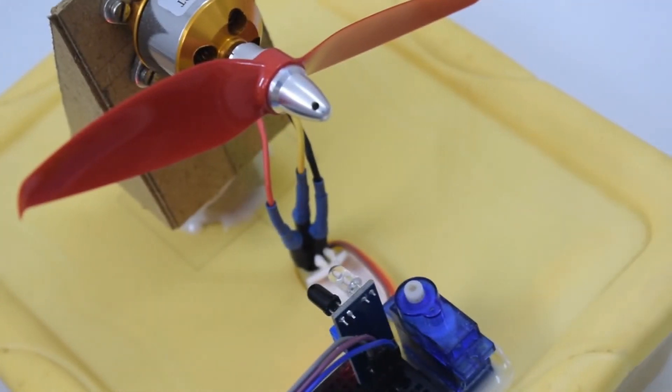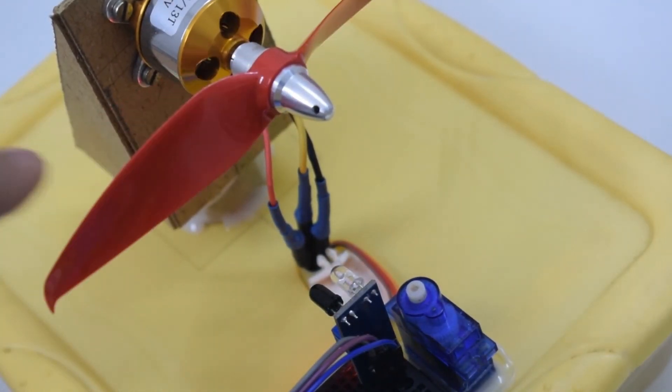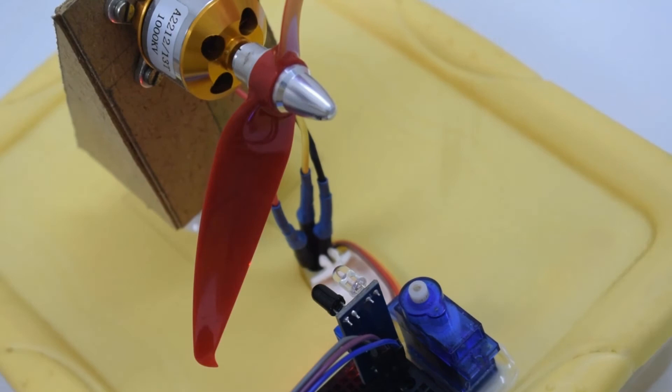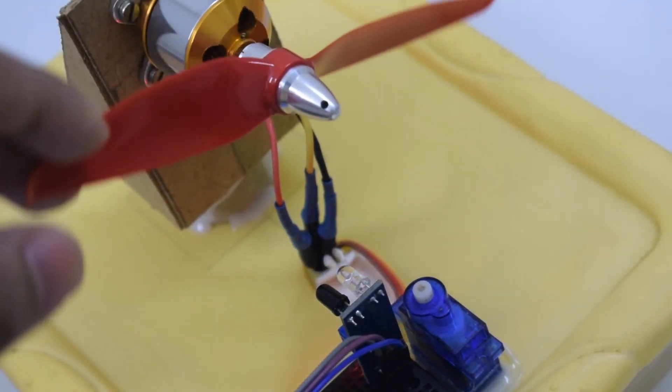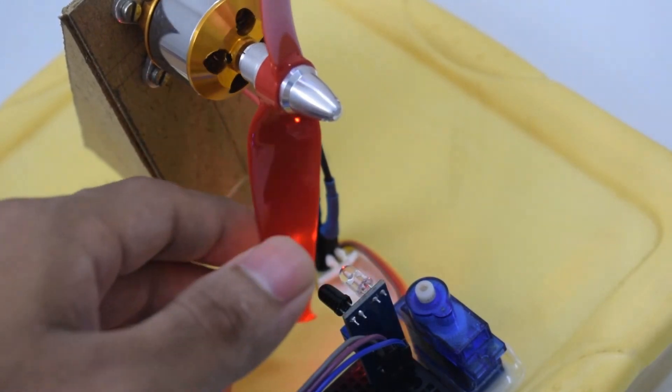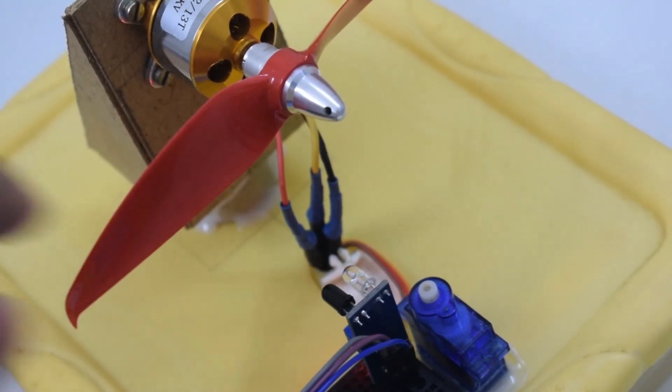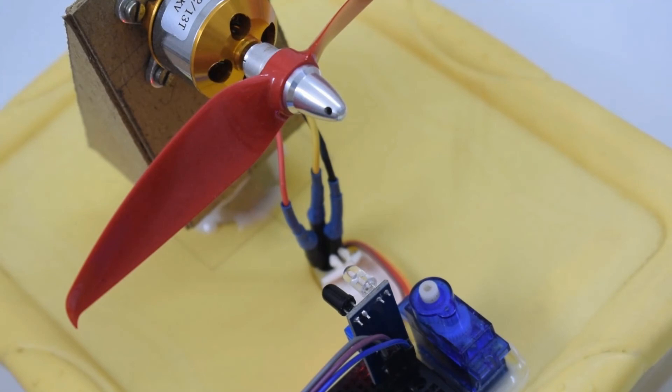To measure the speed of a propeller with two blades, we simply divide the initial RPM by two in the code. We do so because, for every rotation of the propeller, we have two interrupts which are the two blade tips. And similarly, if we had to measure the speed of a tri-blade propeller, we would divide the initial RPM by 3.